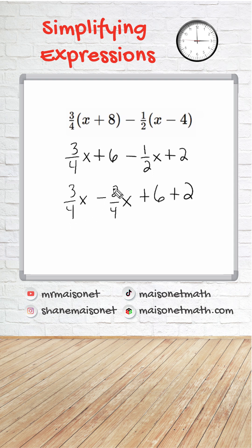All right, now 3/4 x minus 2/4 x is equal to 1/4 x, and 6 plus 2 is positive 8, and that is as far as we can go. These two terms are not like terms, therefore they cannot be combined.